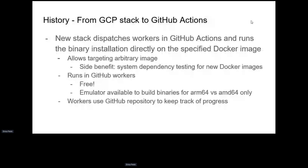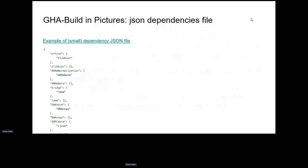Workers don't need any shared file system between them — they use the GitHub repository to talk to each other. Each job is dispatched, does what it does, builds the binary, and when it's done it commits into the GitHub repository to signal completion. That's how it goes through the cycle.